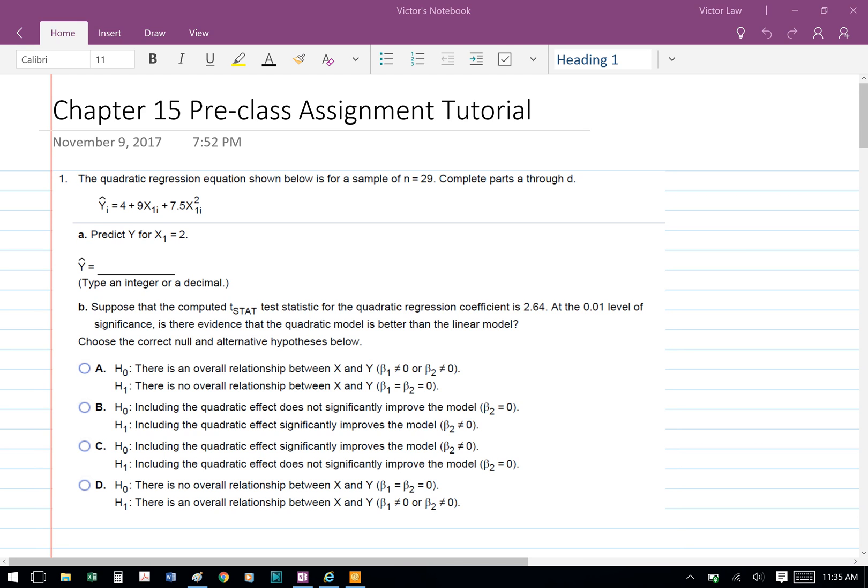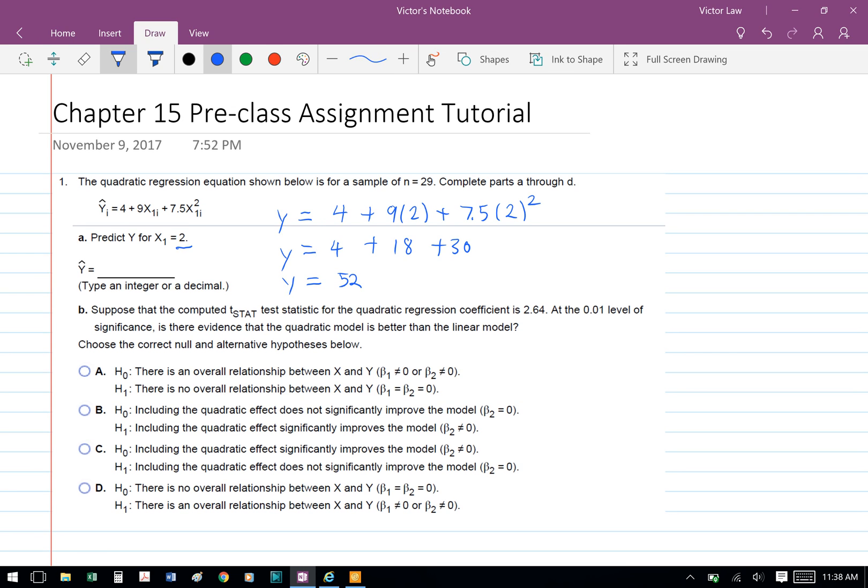Chapter 15 Pre-class Assignment Tutorial. Question 1: Quadratic regression equation shown below is for a sample of n equals 29. Complete part a through d. Part a: Predict y for x equals 2. Here we're substituting the 2 in for the x, so we have y equals 4 plus 9 times 2 plus 7.5 times 2 squared. So we have y equals 4 plus 18 plus 30, so we have y equals 52.